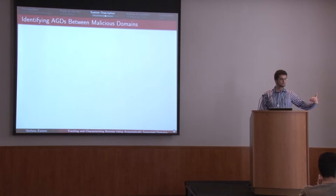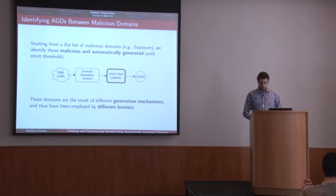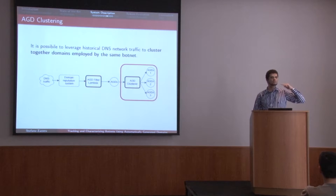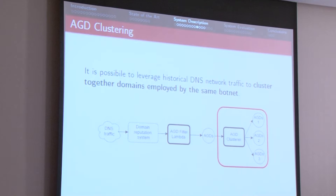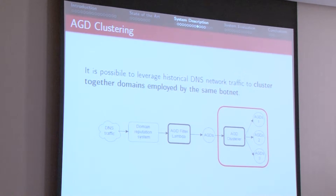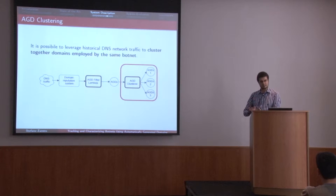The list that we get contains both automatically generated things and malicious things that are not automatically generated — we filter out the latter. Once we have filtered out those, we have a list of things that look automatically generated and are for sure malicious. The possibility that these are botnet command and control centers is terribly high. So what we do is apply the same type of linguistic features plus some other features to do what I call AGD clustering — because we have this pool of automatically generated domains and now we want to know which is which: which of them has been generated by which botnet.